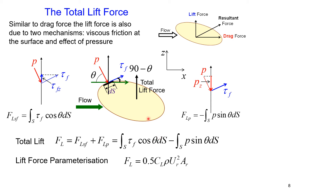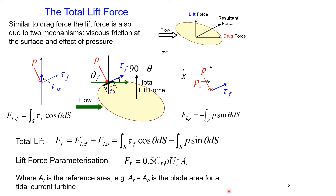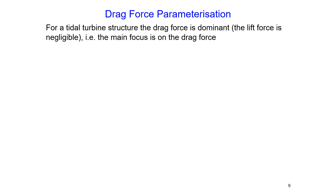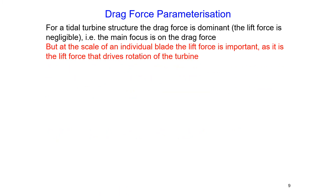Lift force parametrization is similar to that of drag force. Lift force can be calculated as 0.5 multiplied by the lift coefficient, multiplied by fluid density, multiplied by reference velocity squared, multiplied by reference area — for example, the area of the blade of a tidal current turbine. For a tidal turbine structure, the drag force is dominant and the lift force is negligible, so the main focus is on drag force. However, at the scale of an individual blade, the lift force is important as it drives the rotation of the turbine.